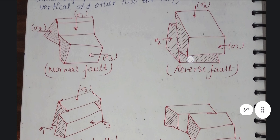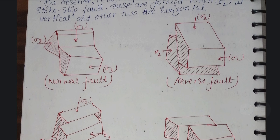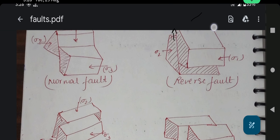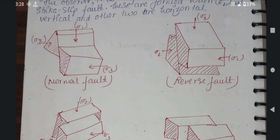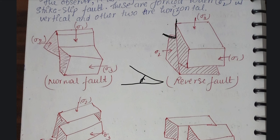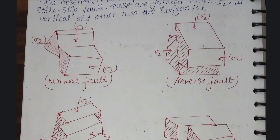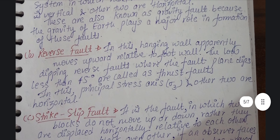Looking at the diagram, reverse fault is shown with slanting motion. Sigma 3 is vertical and the others act horizontally. The fault creates an angle, and this angle is 45 degrees. Faults with angles less than 45 degrees are reduced to thrust faults, while faults at or above 45 degrees are reverse faults.